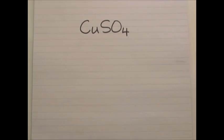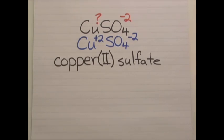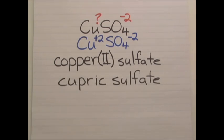How would we name CuSO4? What's the charge of the copper in this case? We know that sulfate is negative 2, so that the copper in this case has to be positive 2. Its name in the stock system would be copper 2 sulfate, cupric sulfate using the old system.